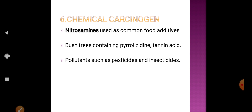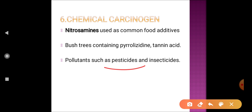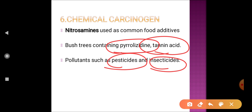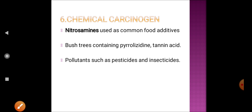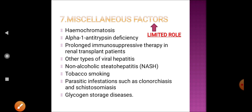The sixth important factor is certain food additives or food toxics. Certain pesticides and insecticides can lead to cancer formation. Pyrrolizidine, tannic acid, and similar pollutants can also act as carcinogens and lead to hepatocellular carcinoma. Nitrosamide, commonly used as a food additive, has also been observed to have an association with development of hepatocellular carcinoma.